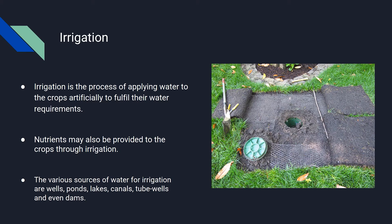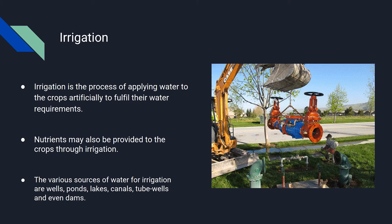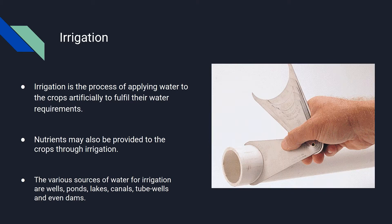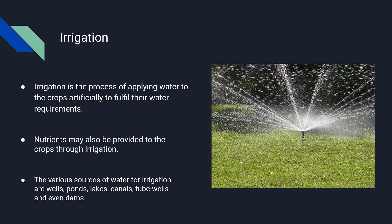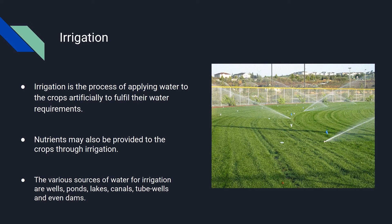Irrigation offers moisture required for growth and development, germination, and other related functions. The frequency, rate, amount, and time of irrigation are different for different crops and also vary according to the types of soil and seasons.